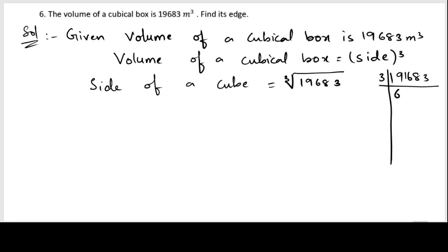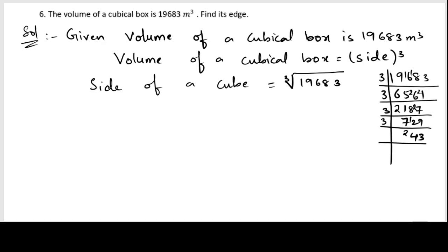Dividing by 3 repeatedly: 19683 divided by 3, and continuing to divide each result by 3 through the multiplication table steps, we keep dividing by 3 until we reach 1. This gives us nine factors of 3.